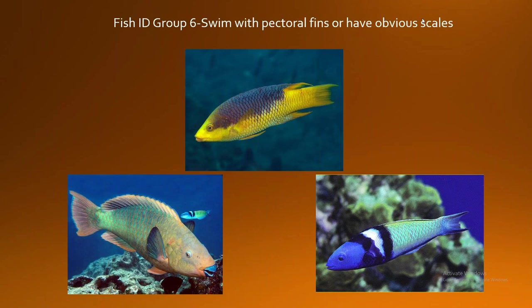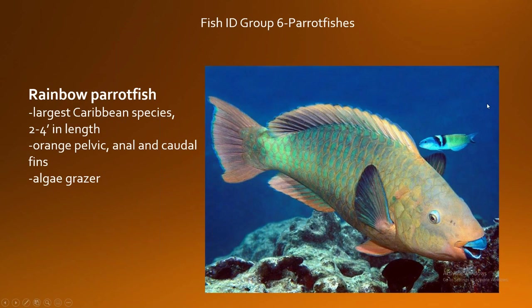First we're going to talk about fish that swim with their pectoral fins or have obvious scales — specifically the wrasse and parrotfish families. The parrotfish is one of our quintessential reef fish here in Florida. These fish are herbivores, meaning they graze algae and help to keep algae in control on coral reefs. Even though algae is natural and part of the reef ecosystem, it needs to exist in a proper quantity, so we don't want too much algae — that's why this family is so very important.